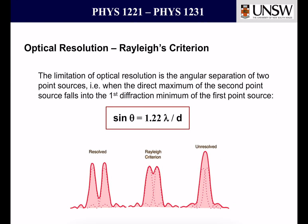Optical resolution and the Rayleigh criterion — that defines the limitation of the resolution of, for example, a microscope or a telescope. The limitation of optical resolution is the angular separation of two point sources, which means when the direct maximum of the second point source falls into the first diffraction minimum of the first point source. For a circular aperture, the following equation is given: sin θ = 1.22 λ/d, where θ is the angular resolution. For example, if you look into the sky, d would be the size of the mirror of the telescope.